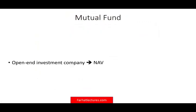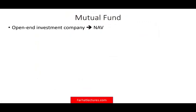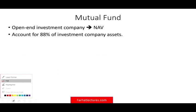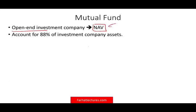So let's talk about mutual funds. The first thing we want to know about mutual funds is they are open-end investment companies. Open-end investment companies means they are redeemed at net asset value. If you don't know what open-end is or what NAV is, please view the prior lecture. It means you can redeem them from the fund at net asset value. They account for 88% of investment company assets, meaning the large majority of investment companies are mutual funds.